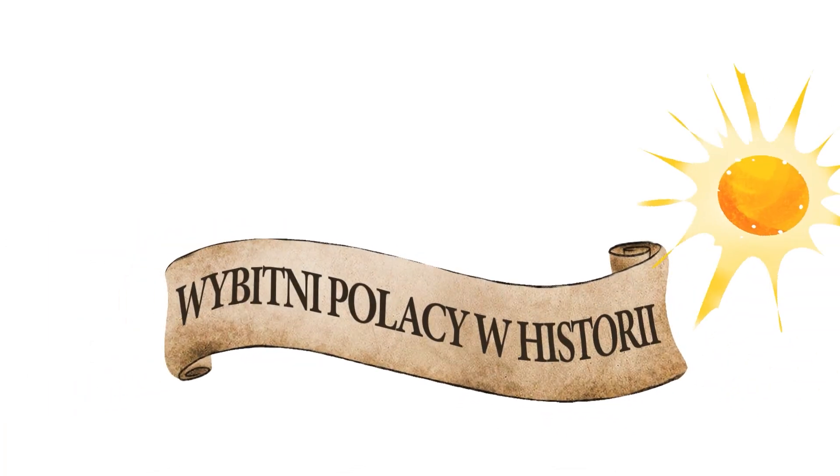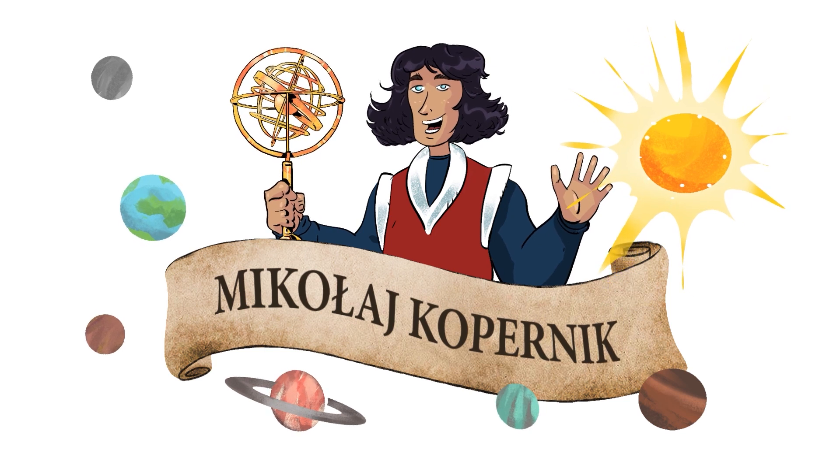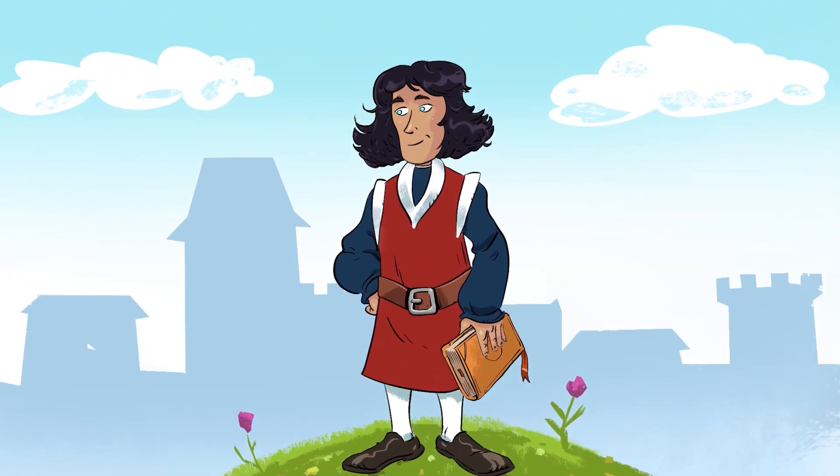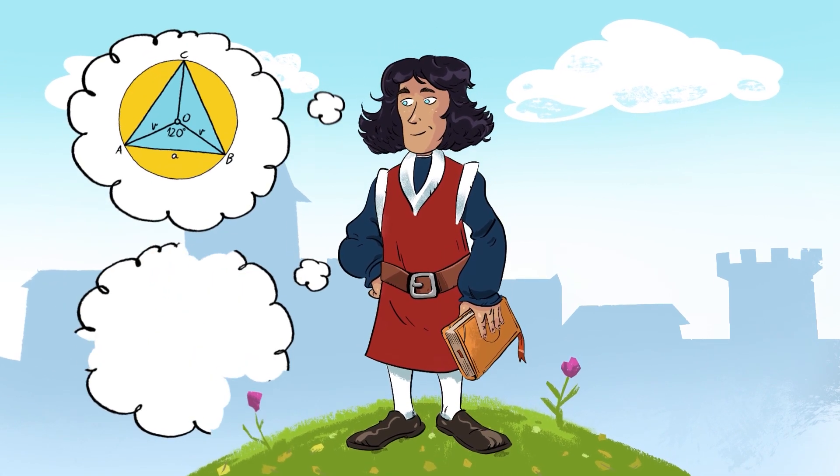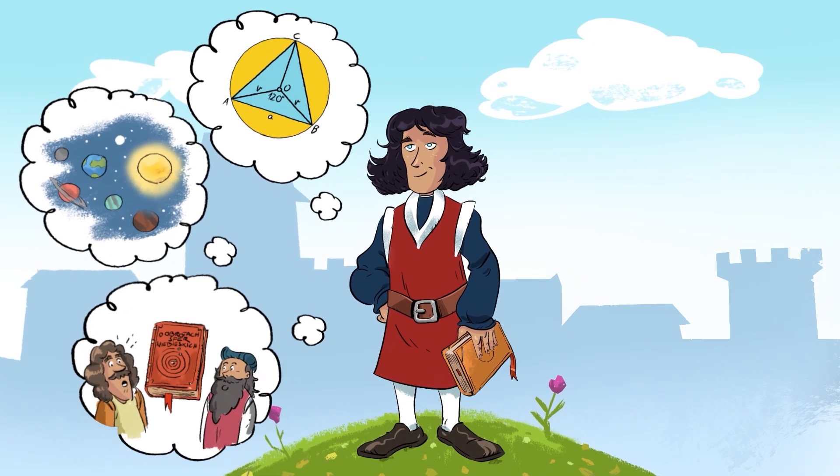Outstanding Poles in History. Nicolaus Copernicus, commonly known as the Polish greatest scholar. He was an outstanding mathematician and a genius astronomer. His theory shook the laws of science.